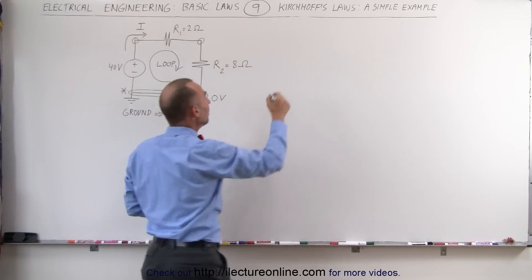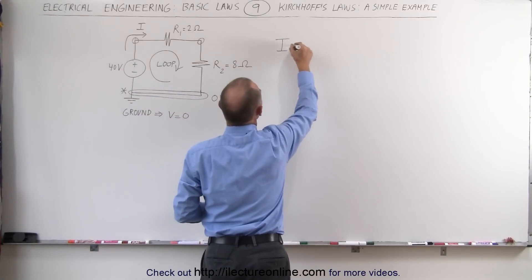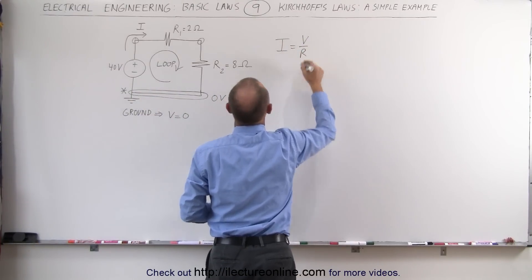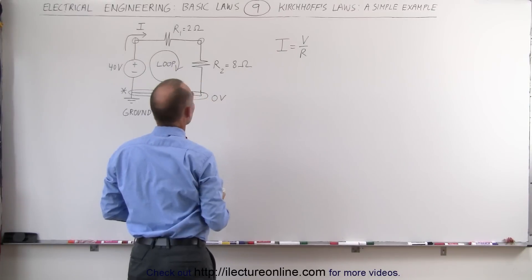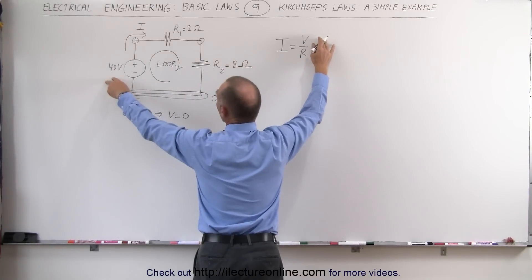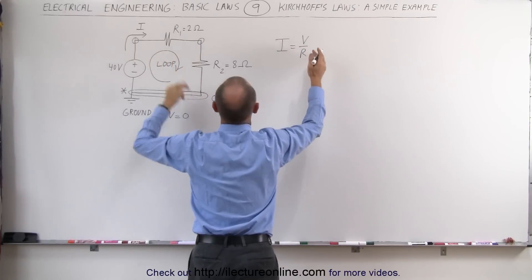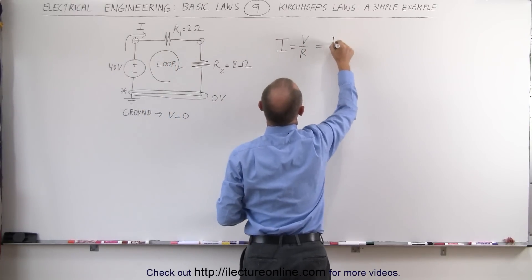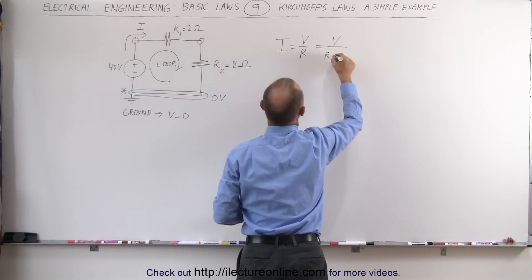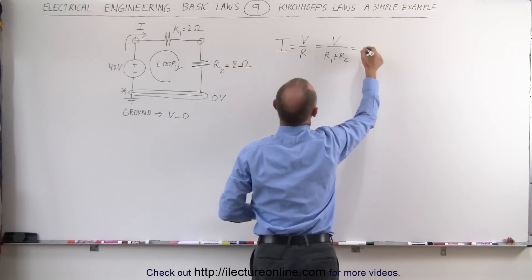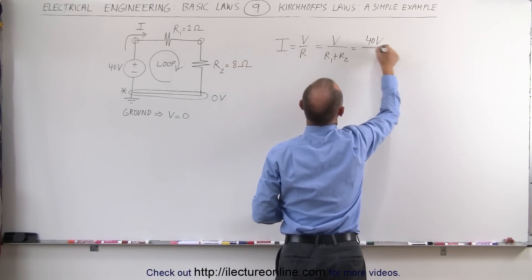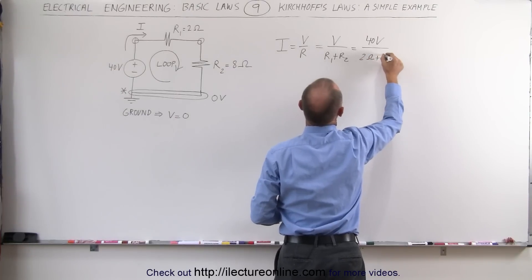We can use Ohm's Law instead where we can say that I is equal to V divided by R to find the current in the loop. The voltage is known. It's 40 volts. The resistance, we simply have to add up the two resistors because they're in series. So in this case, this is V divided by R1 plus R2 which is equal to 40 volts divided by 2 ohms plus 8 ohms.